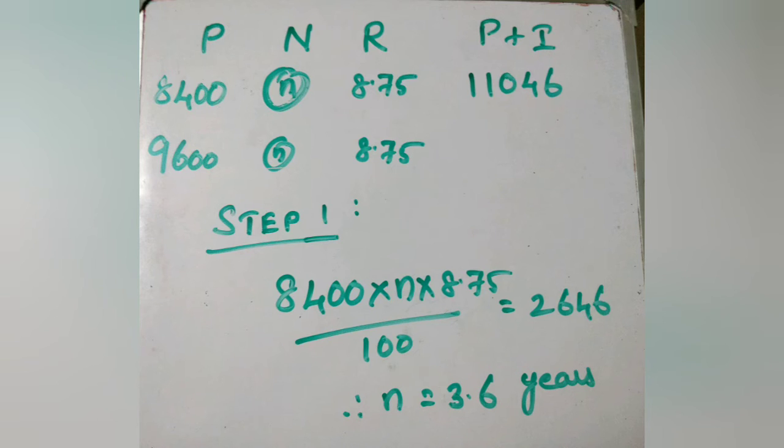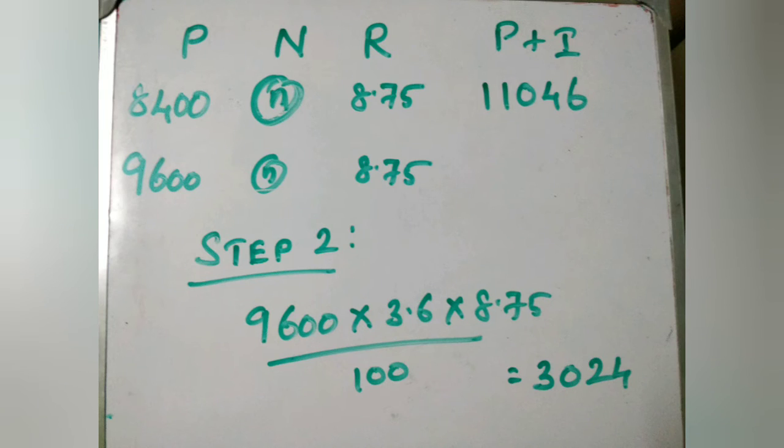In step one, we identified n as 3.6. Now in step two, we apply this value again—more division and multiplication—which comes to Rs.3,024. That's the answer, but how do we do this in one single step?